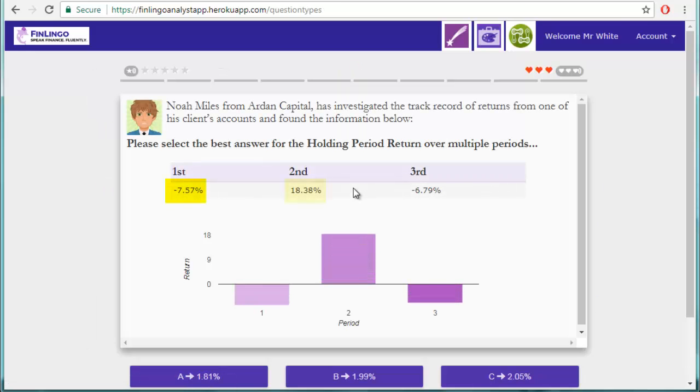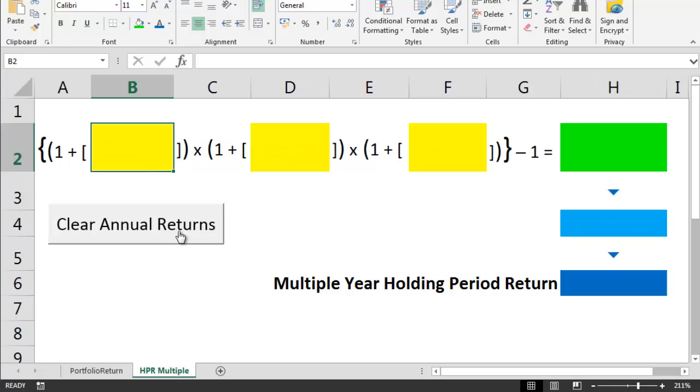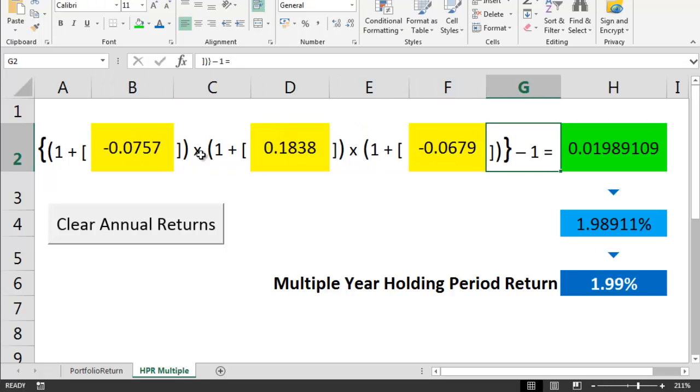First, we bring up the numbers. I'll highlight these so we can move them over to our spreadsheet. Let's clear out the old figures and enter the new ones from our unique question on finlingo. Here's the first year, then the second year, and then the final year figures. Obviously, in something like the CFA exam, you do all this work on a calculator.